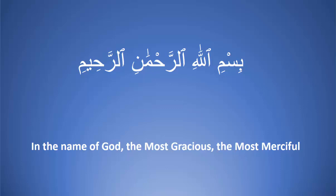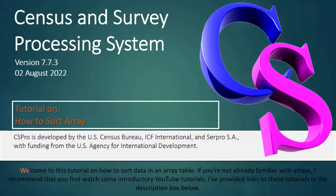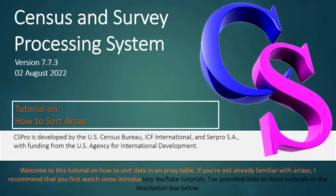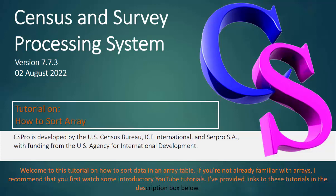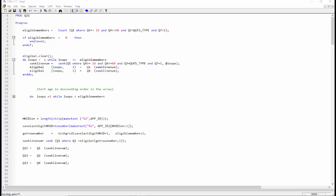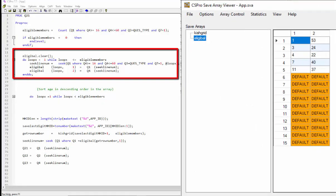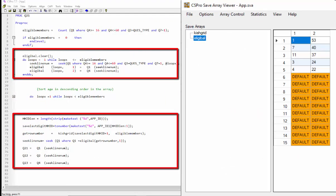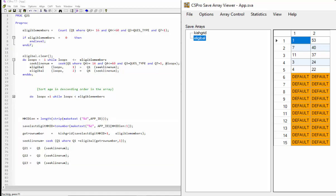Assalamualaikum, CS Pro users. Welcome to this tutorial on how to sort data in an array table. If you are not already familiar with arrays, I recommend that you first watch some introductory YouTube tutorials — links are provided in the description box below. Once we have filled the eligible array table, and before we can select the eligible member, we need to sort the array in a specific order. In this tutorial, we will cover how to write sorting code to rearrange the values in the eligible array table.